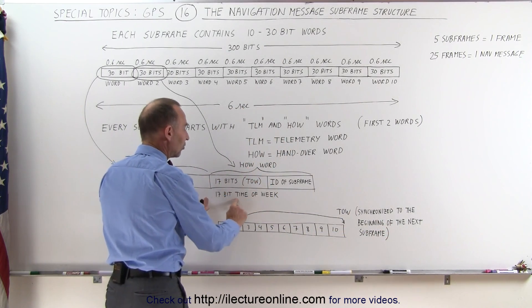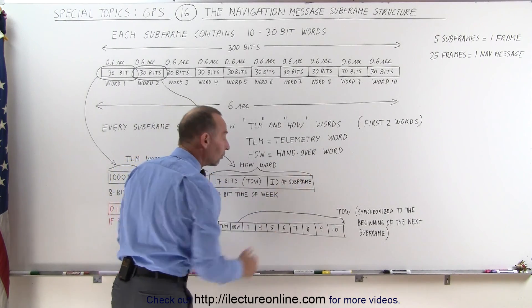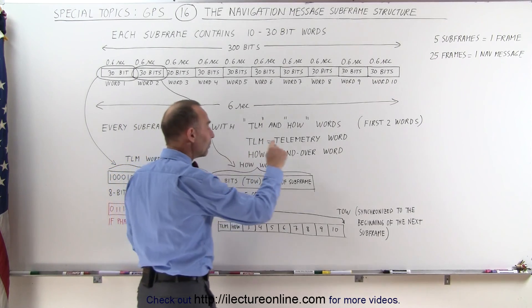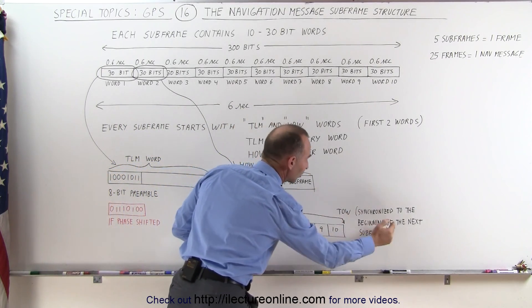the 17-bit message that tells the time of the week in the second word of the subframe, called the HOW word, is actually the time of the week at the beginning of the next subframe, which then would be 8 words later.